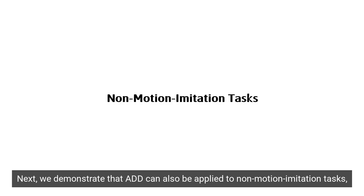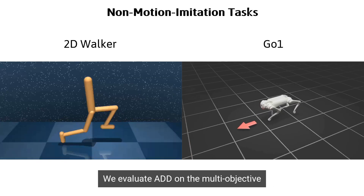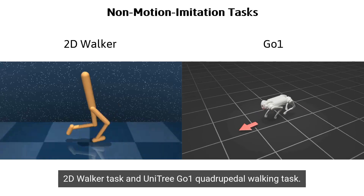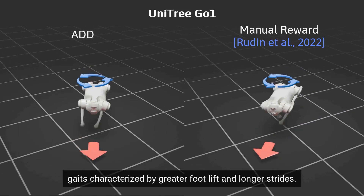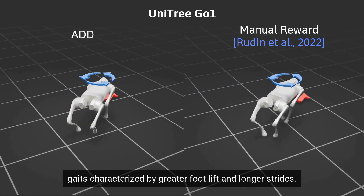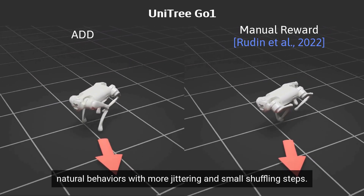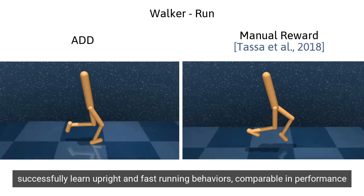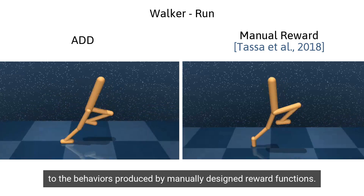Next, we demonstrate that ADD can also be applied to non-motion imitation tasks, such as standard RL benchmark tasks. We evaluate ADD on the multi-objective 2D walker task and Unitree GO-1 quadrupedal walking task. ADD enables the GO-1 robot to develop more natural gaits, characterized by greater foot lift and longer strides. In comparison, the manually tuned rewards produce less natural behaviors with more jittering and small shuffling steps. Walkers trained using ADD successfully learn upright and fast-running behaviors, comparable in performance to the behaviors produced by manually designed reward functions.